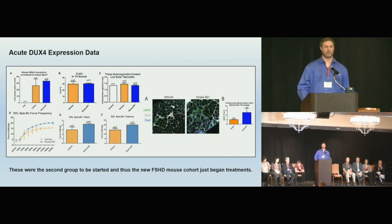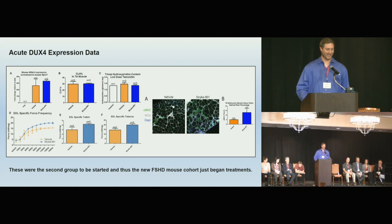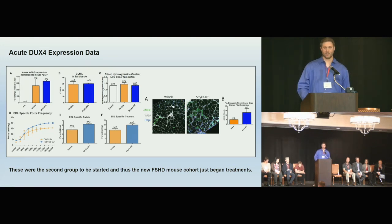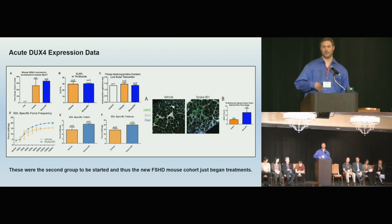Data is very preliminary — the study only started in February and statistical power isn't there yet. The early data shows STRIKA-001 is not affecting DUX4 expression; in fact, the muscle appears to have similar or slightly more DUX4 activity. The drug is not affecting the initial response to DUX4 — the muscle is still being damaged as predicted. The treatment is aimed at enhancing regeneration after that damage occurs, not preventing the damage itself.